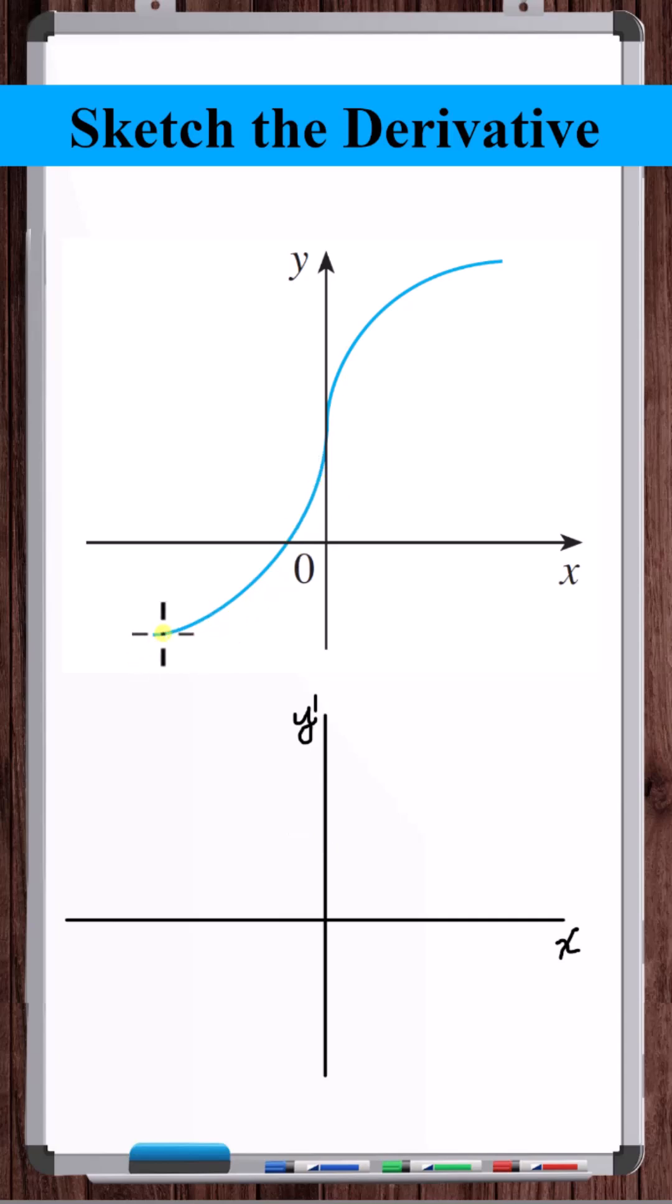Next, if we look at this side of the graph, we can see that the slope is always positive. Looks like as x goes to negative infinity, the slope is approaching zero, but the slope is always positive. So we're going to be above the x-axis over here.